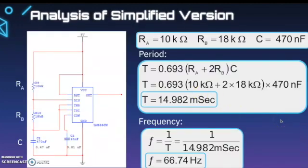Looking at the simplified version, RA is a 10 kiloohm resistor, RB is an 18 kiloohm resistor, and C is 470 microfarads. We can calculate the period: the period for this ends up being 14.982 milliseconds, and then our frequency comes out to 66.74 hertz.